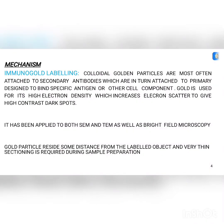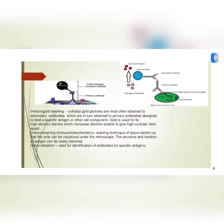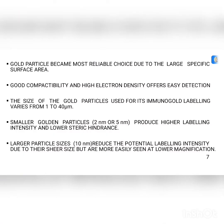The mechanism of immuno labeling: colloidal gold particles are most often attached to the secondary antibody, which is attached to the primary antibody. The primary antibody is designed to bind a specific antigen or other cell component. So the gold particle attaches to the secondary antibody, the secondary antibody attaches to the primary antibody, and the primary antibody binds the specific antigen or cell component.